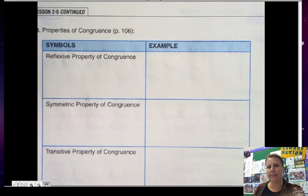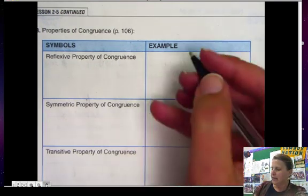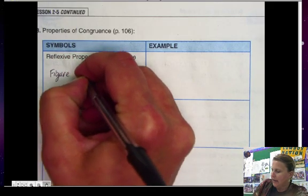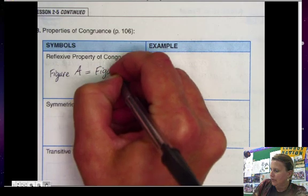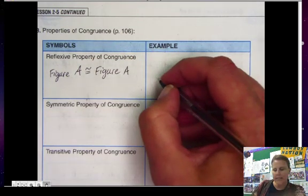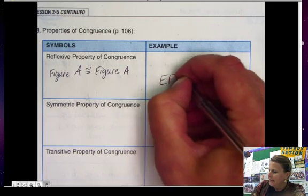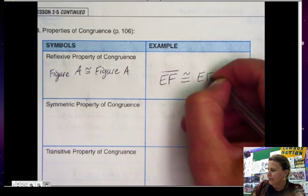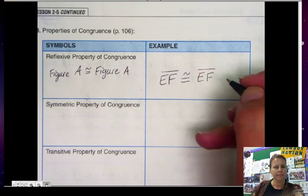Reflexive property of congruence. So the reflexive property of congruence means that a figure a is congruent to figure a. For example, I could say that EF segment is congruent to segment EF.